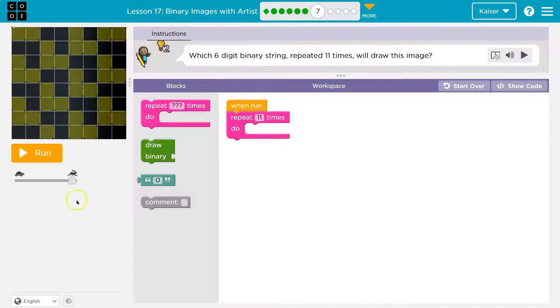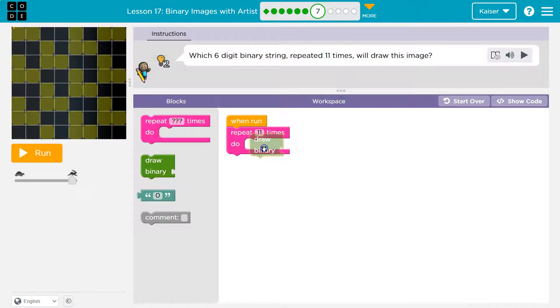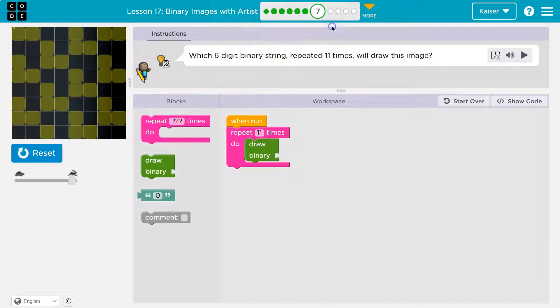So we have a repeat 11 times, but if I hit run, nothing's going to happen. There's no code inside of this. So let me draw binary, and still, if I hit run, nothing happens. I have to tell it what to draw.